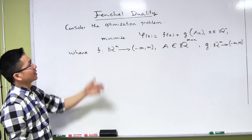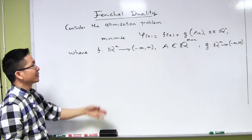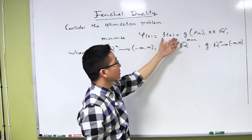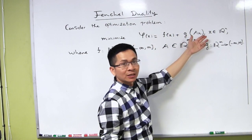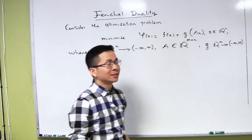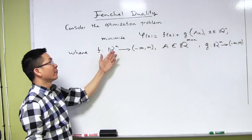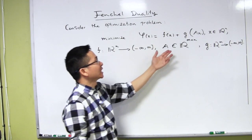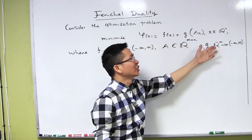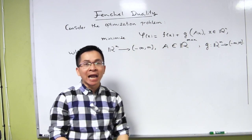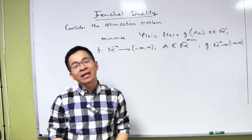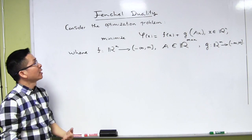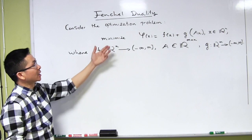We consider the following optimization problem: minimize φ of x, which is f of x plus g of Ax, where x runs in R^n. Here f is a function from R^n to the extended real line, A is an m by n matrix, and g is a function from R^m to the extended real line.